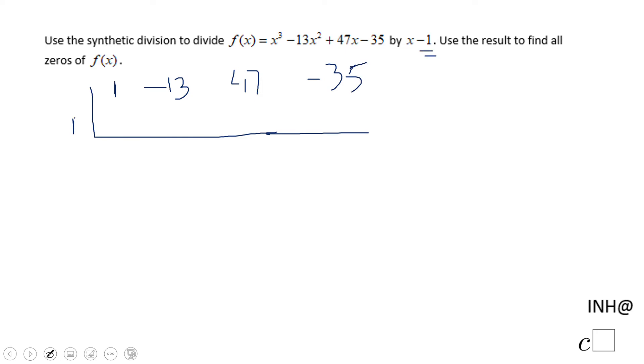So we're going to put a 1 here and we're going to start by dropping this first one. And then we have 1 times 1, that is 1. If we add these two we get negative 12.